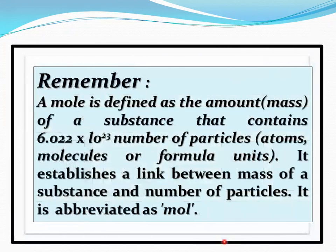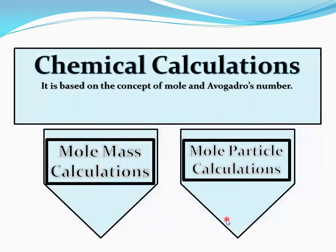Remember, a mole is defined as the amount of a substance that contains 6.02 × 10²³ particles. Those particles may be atoms, molecules, or formula units. It establishes a link between the mass of a substance and the number of particles. It is abbreviated as mol. Now, coming to chemical calculation — it is based on the concept of the mole and Avogadro's number. In the first step we calculate mole-mass calculations, and in the second step, mole-particle calculations.